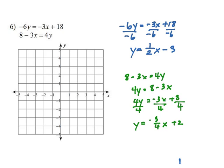Okay, so those are our two equations. Let's go ahead and graph the first one. Okay, so the y-intercept for this one is negative 3, and the slope is 1 half.